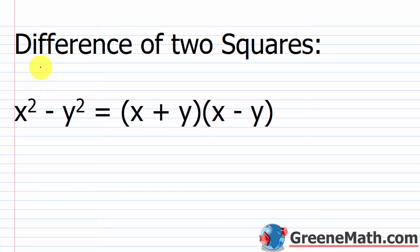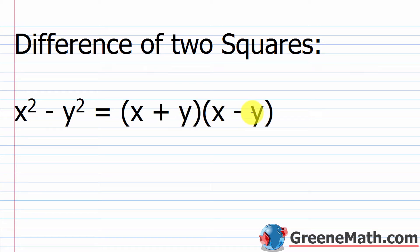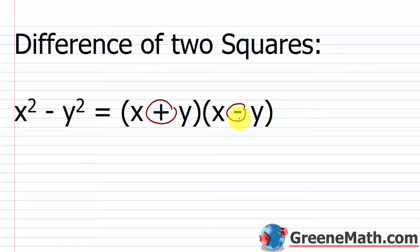I'm going to start out by talking about the difference of two squares. If you see something squared minus something else squared, it factors into two binomials — the first thing that's squared goes in the first position of each, and the second thing that's squared goes in the second position of each. The sign is going to be different each time: you have a plus in one and a minus in the other. Swapping them around wouldn't affect the answer.